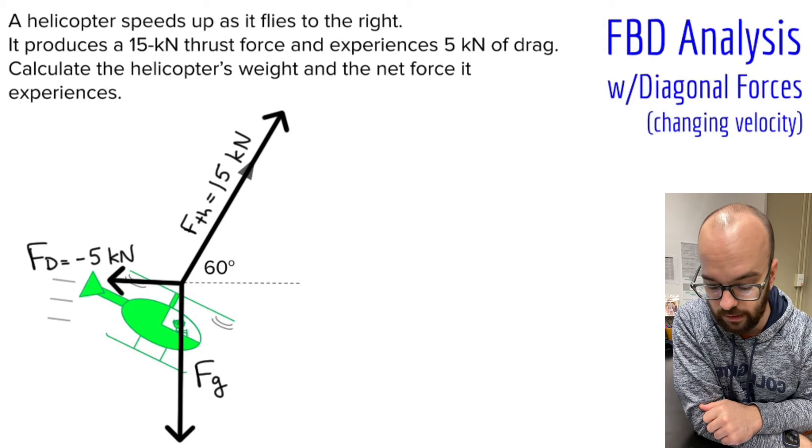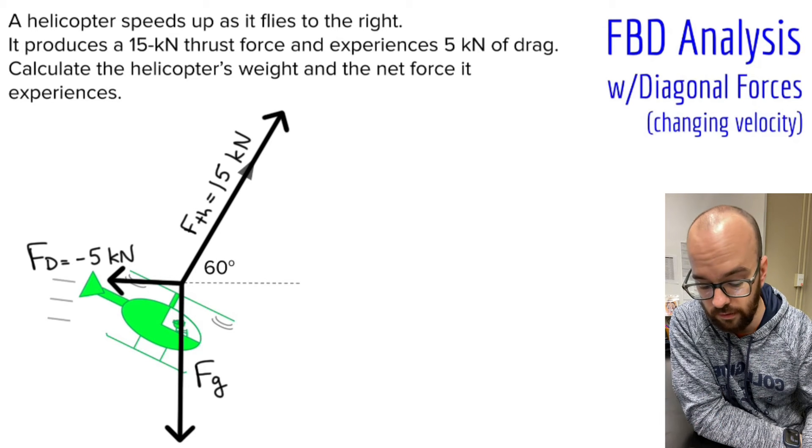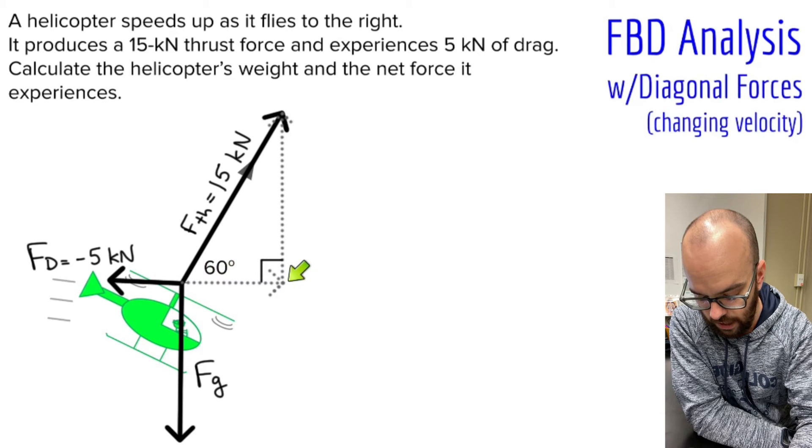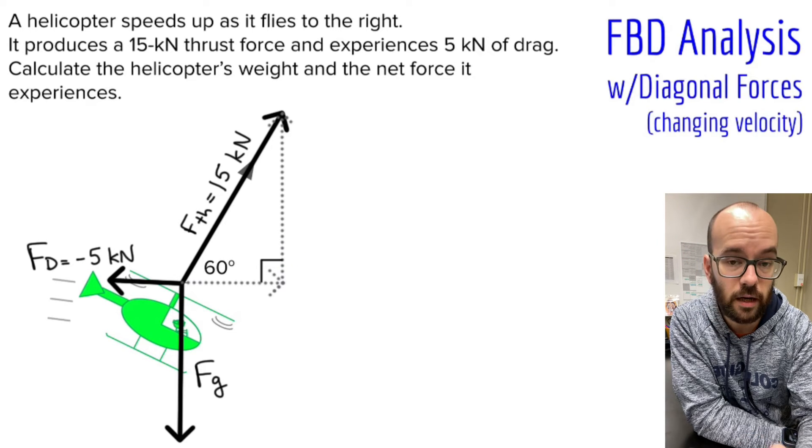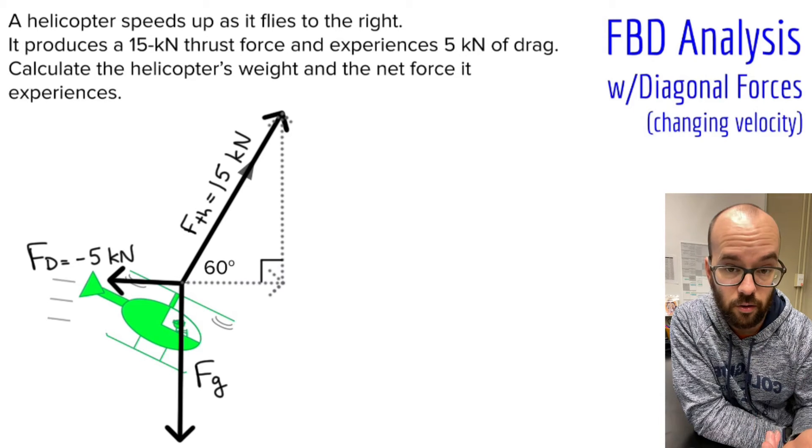So these are all the forces acting on the helicopter. Now I'm going to take that diagonal force and resolve it into its two components. I've got that horizontal component to the side, and that vertical component up. I draw them like this so that they form a triangle, and I can use some trig to solve for the magnitude of each of those two components.